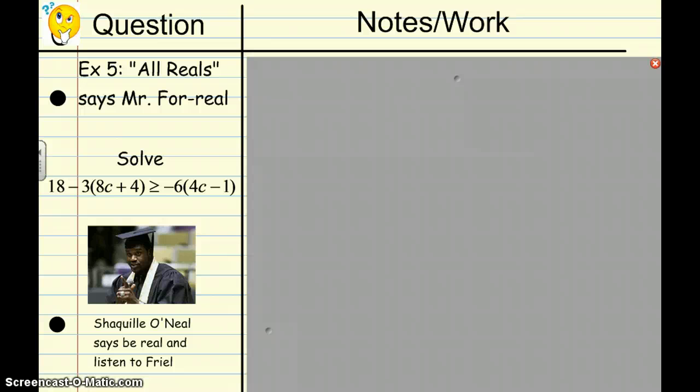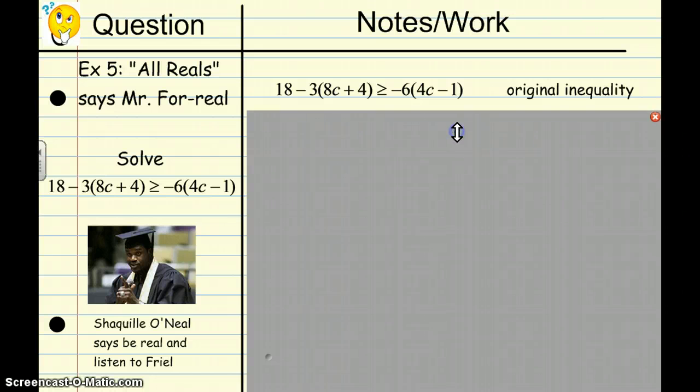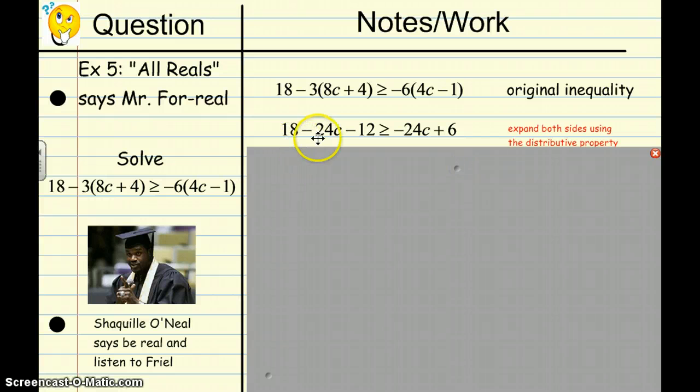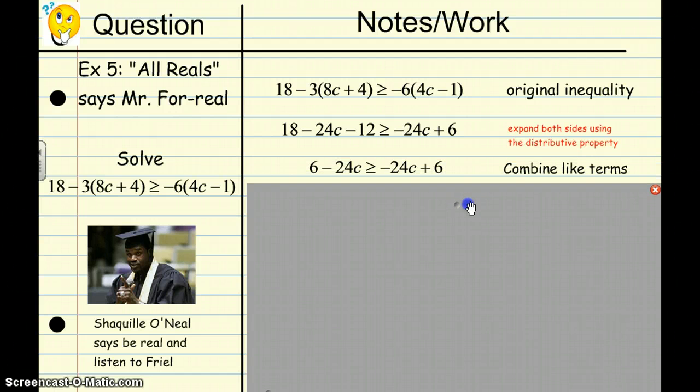Moving forward, example 5. All reals, says Mr. For Real. Solve the following inequality. Shaquille O'Neal says be real and listen to Friel. I will be revealing shortly if you need to pause. And here is the original inequality. You will notice in this problem, we have to distribute on both sides. Oh, no. Do so. And you should get 18. Well, you can see it. 18 minus 24C minus 12 is greater than or equal to negative 24C plus 6. We expanded both sides using the distributive property. Next, you combine like terms on the left and you get 6 minus 24C is greater than or equal to negative 24C plus 6.